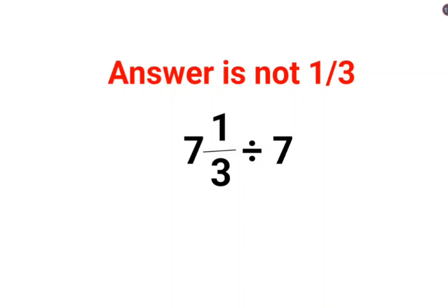Welcome everyone. A lot of people thought that 7 1/3 divided by 7 is basically you can just cancel the 7s and you are left with 1/3 divided by 1. So the answer for this question is supposed to be 1/3. This is incorrect.